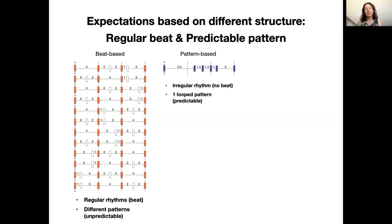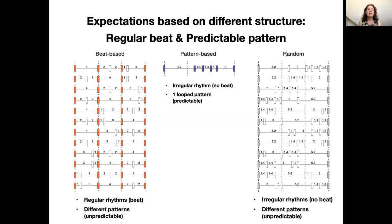Finally, we can create random rhythms without a beat and with unpredictable patterns by concatenating varying irregular patterns. Here it is hard to predict the timing of sounds at all.